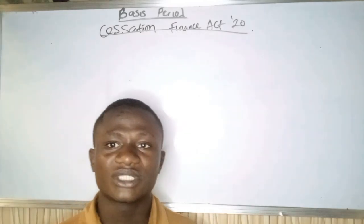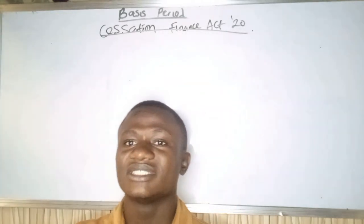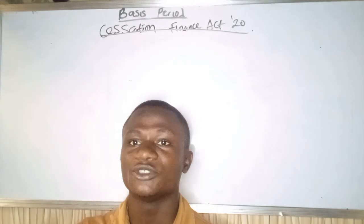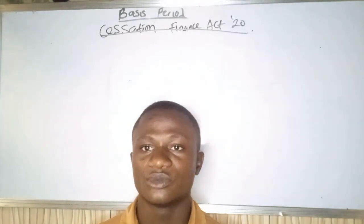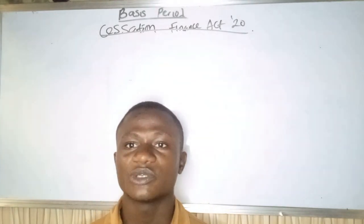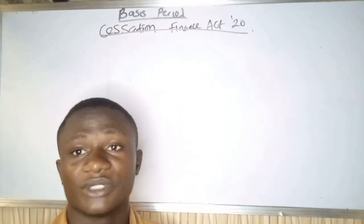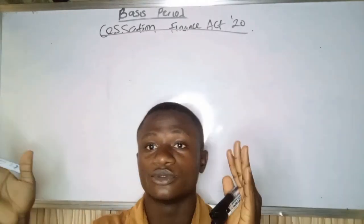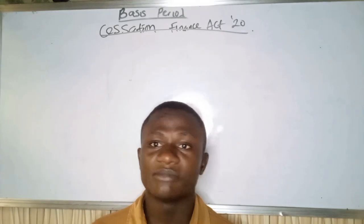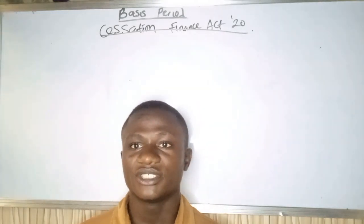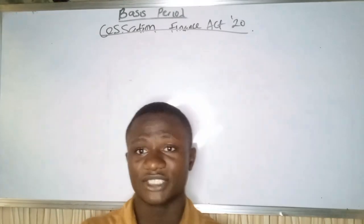The rule states that all you need to know on cessation is the date the business ceases, then you add six months. In a year we have January to December, so if a business ceases in March 2020, you add six months to it: March, April, May, June, July, August, September.